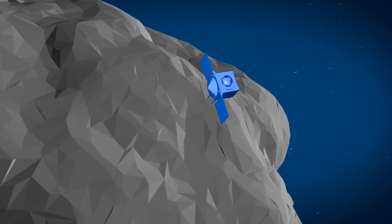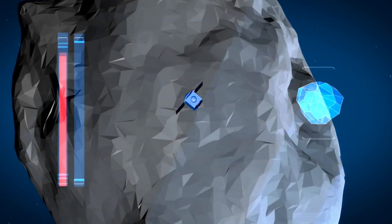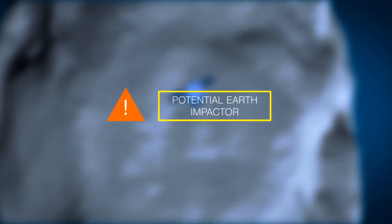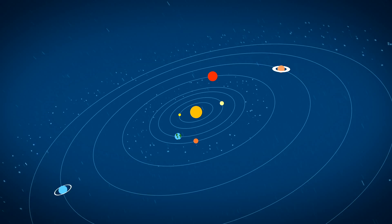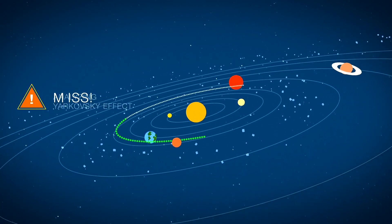By studying the Yarkovsky effect on Bennu with the OSIRIS-REx spacecraft, NASA scientists hope to better predict how an asteroid might move through the solar system and whether it poses any danger to us here on Earth. So the next time an asteroid starts gradually moving into our neighborhood, we'll have a better idea of exactly where it'll end up.